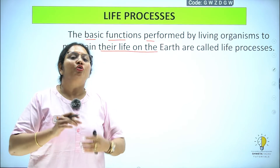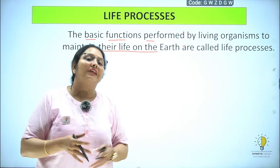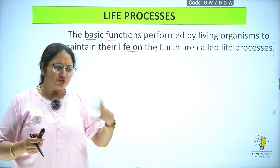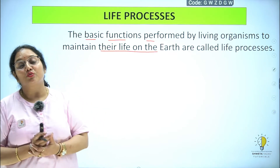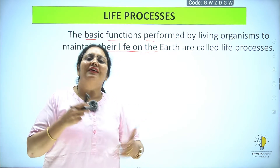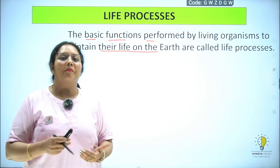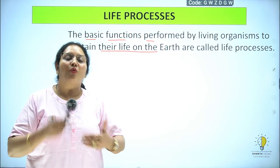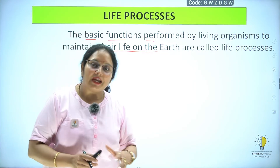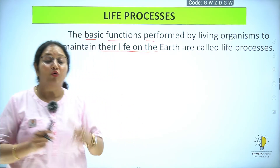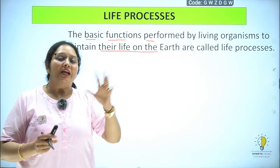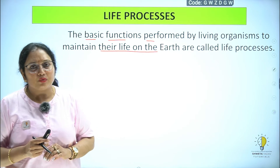अगर हम एक normal four wheeler देखें, तो उसमें जो चार पहिये हैं वो बहुत important हैं. उसमें अगर एक भी पंचर हो जाता है तो गाड़ी नहीं चल सकती. थोड़ी देर चलने के बाद उसमें कोई न कोई malfunctioning आ जाएगी. तो इसका मतलब यह है कि जो life processes होते हैं वो गाड़ी के चार पहियों की तरह होते हैं, जैसे life को जीने के लिए इन चारों processes का होना जरूरी है.